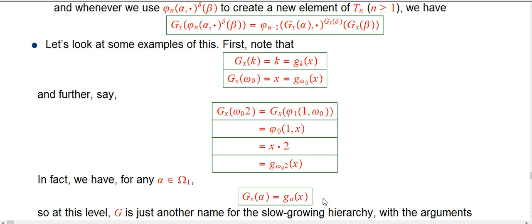So in fact, you can show that it's exactly just at this level. So this is where alpha is in the countable ordinals, the countable tree ordinals, that Gx of alpha...